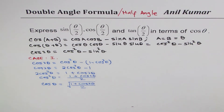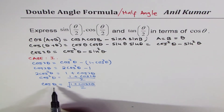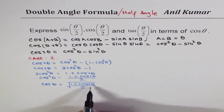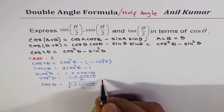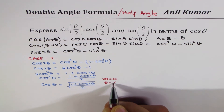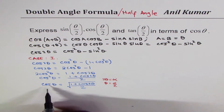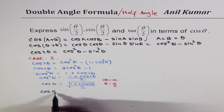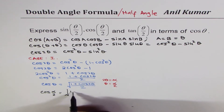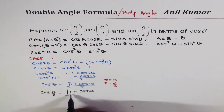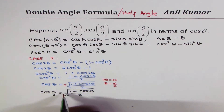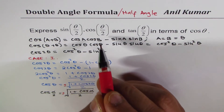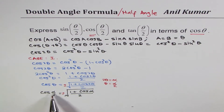We are interested in the half angle, so we substitute θ = α/2, meaning 2θ = α. With that substitution we get cos(α/2) = ±√((1 + cos α)/2). Whenever you take a square root you must include both positive and negative signs. This gives us the half-angle formula for cosine.